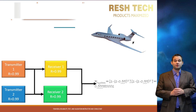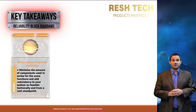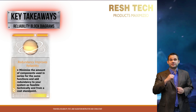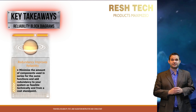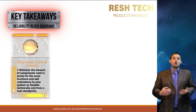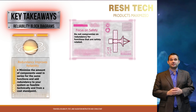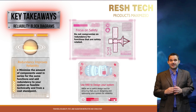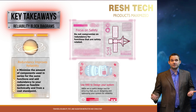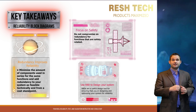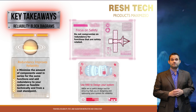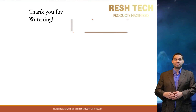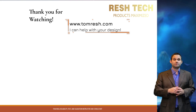Some key takeaways from this video: Redundancy improves reliability by minimizing components in series for the same functions. Add redundancy to your system as feasible, technically possible, and from a cost standpoint. Focus on safety — do not compromise on redundancy for safety-related functions. Use reliability block diagrams as a design tool; RBDs are useful for ensuring your system is optimized for reliability. If you need help optimizing your system for reliability, feel free to reach out via the links provided.